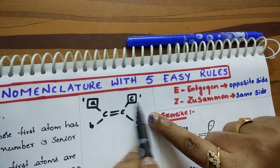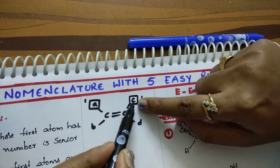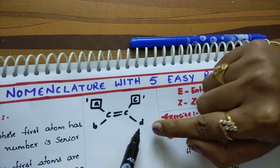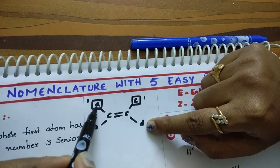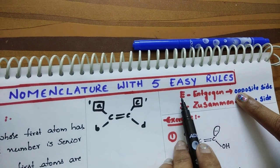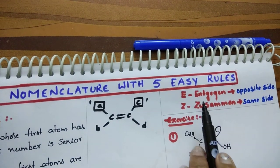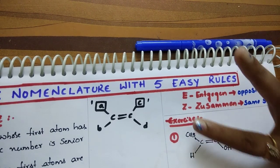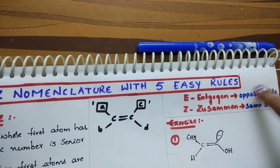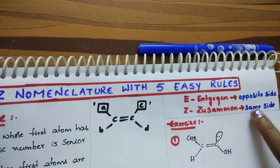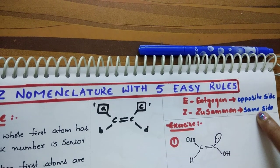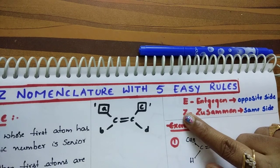If both groups are on the same side, that is Z. Suppose if among C and D, D is the senior group — more priority group — then if A and D are on the opposite sides, we give it the nomenclature E. E means 'Entgegen', which is a German word. Both are German words. Z means same side, and E means both priority groups are on the opposite side.